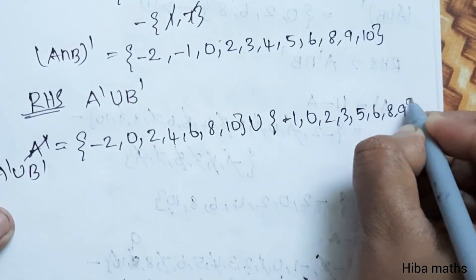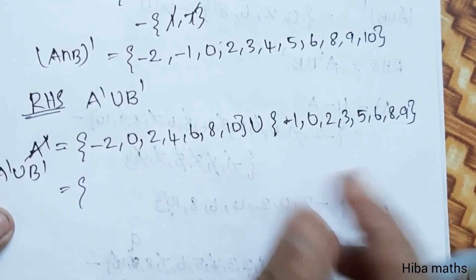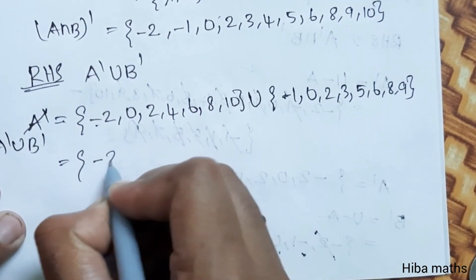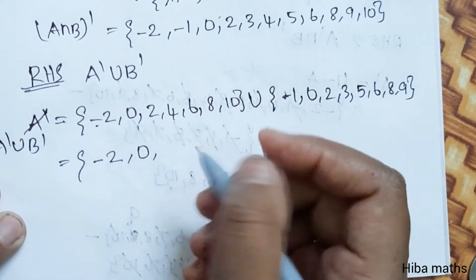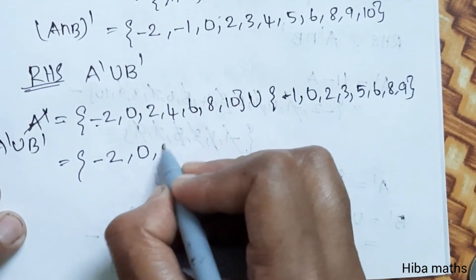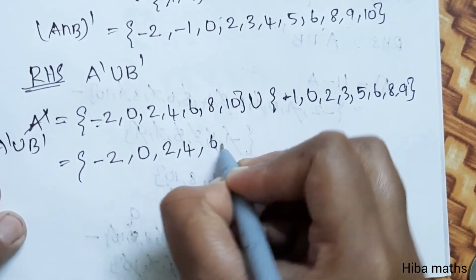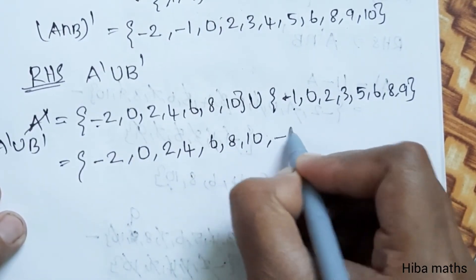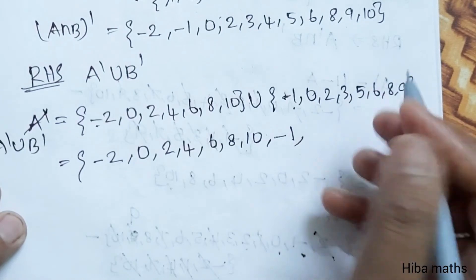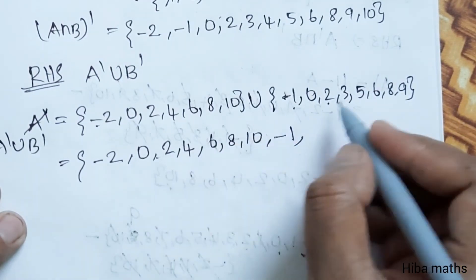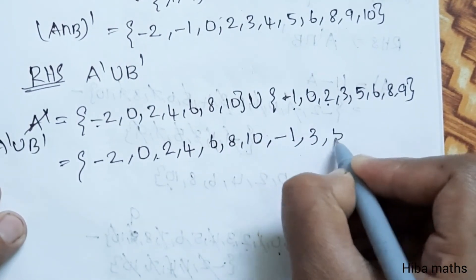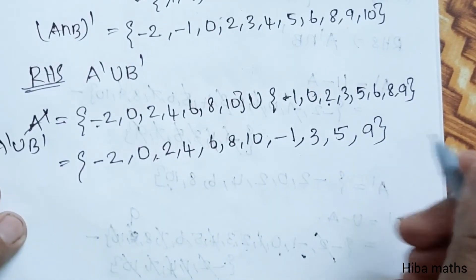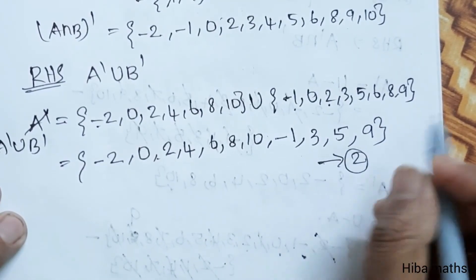RHS: A dash union B dash. A dash = {-2, 0, 2, 4, 6, 8, 10} and B dash = {-1, 0, 2, 3, 5, 6, 8, 9}. Taking the union: elements -2, -1, 0, 2, 3, 4, 5, 6, 8, 9, 10. The common result matches both sides.